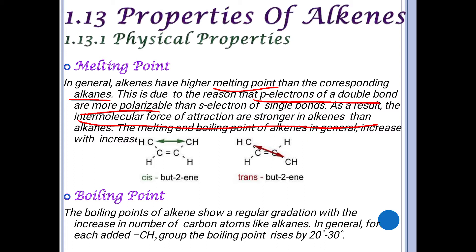For cis isomers, the boiling point and melting point are higher because the groups are on the same side, increasing intermolecular forces. For trans isomers, the values are lower. By comparing melting and boiling points, we can identify whether a compound is cis or trans.